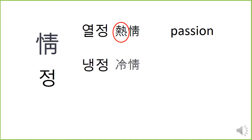냉정. 냉 means cold. You know, in summer in South Korea, 냉면 — cold noodle — is very popular. 냉 means cold, so 냉정 means cold emotion, cold-hearted. When someone's attitude is very cold, we use 냉정하다.